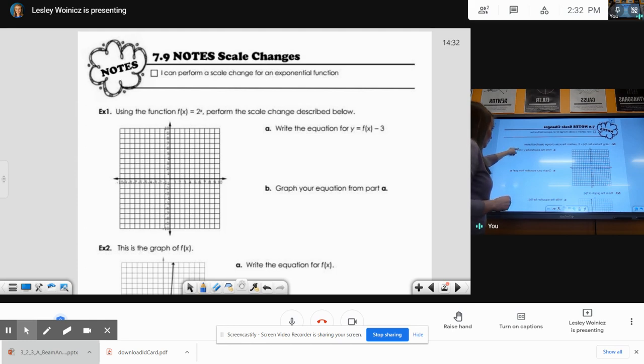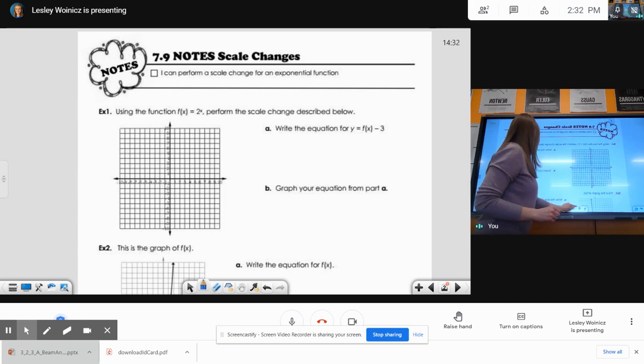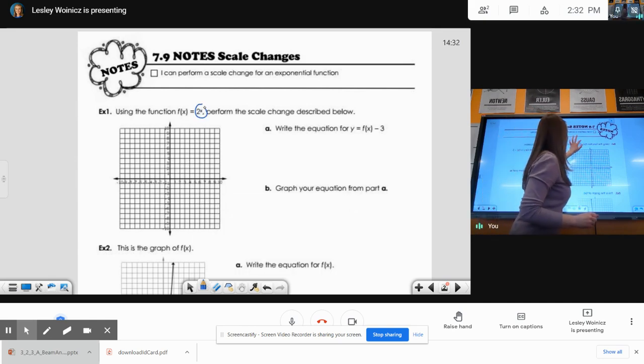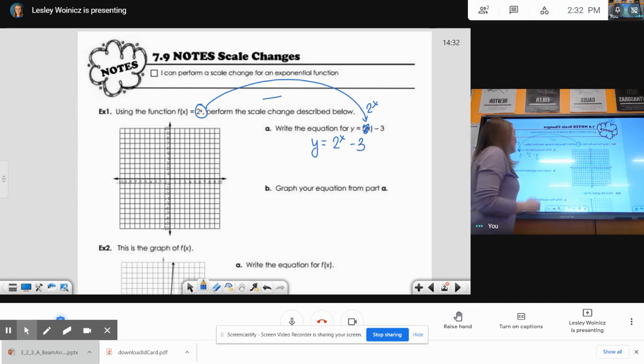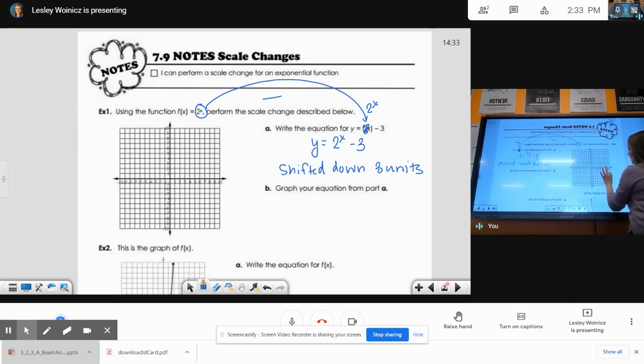So all we have to do is do this rule on f of x. Wherever we see f of x, we are going to replace it with 2 to the x. Because they are equal, so I'm going to put 2 to the x in right there. And it will be y equals 2 to the x minus 3. That's it for part A. Now you can see that from this negative 3, that this function is shifted down 3 units. So we are going to put our horizontal asymptote down 3 units from y equals 0 at y equals negative 3.